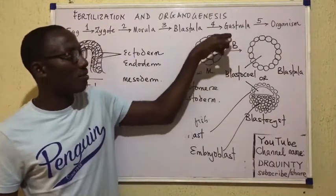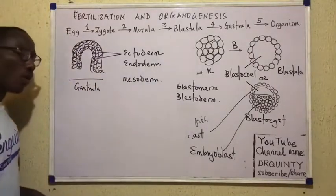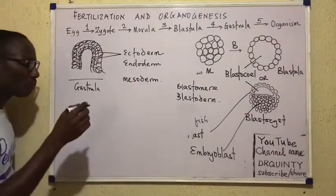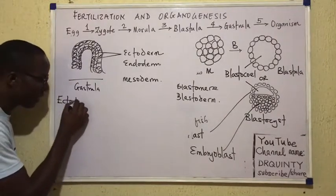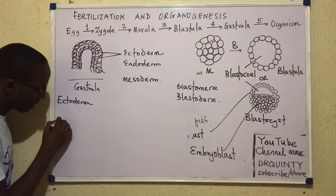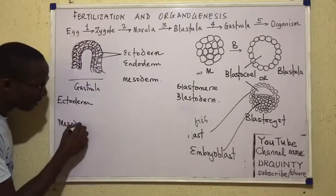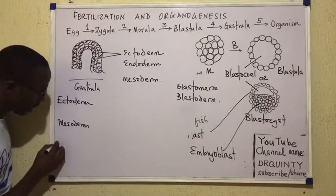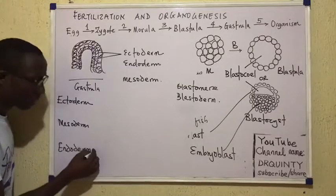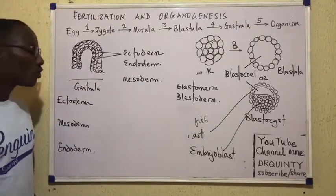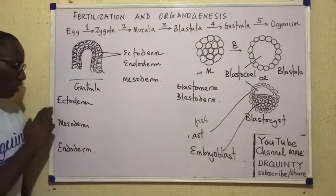The main thing that follows gastrulation is the formation of the organs. So at this point it's important that you know the organs that arise from the ectoderm, the organs that arise from the mesoderm, and then the organs that arise from the endoderm. This is very important because it is high yield in exams. What structures come from these three germ layers?